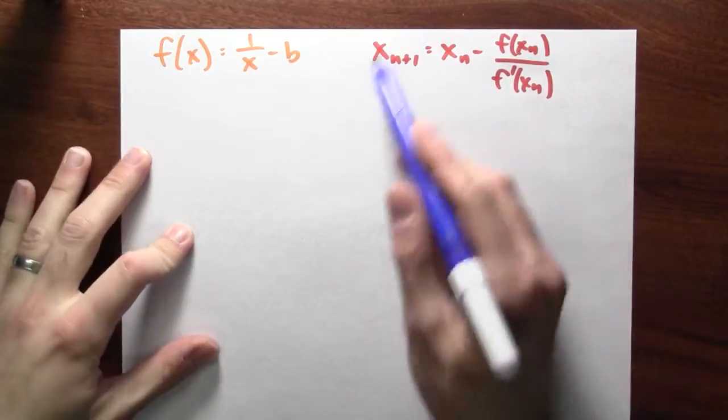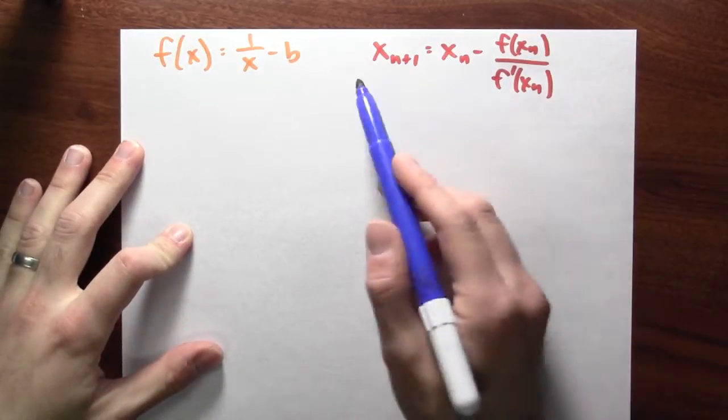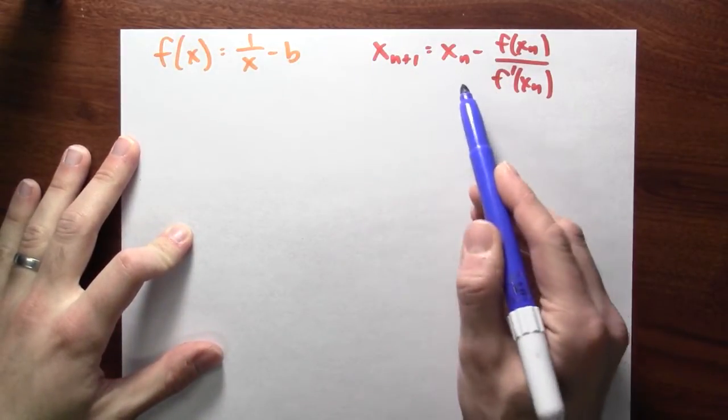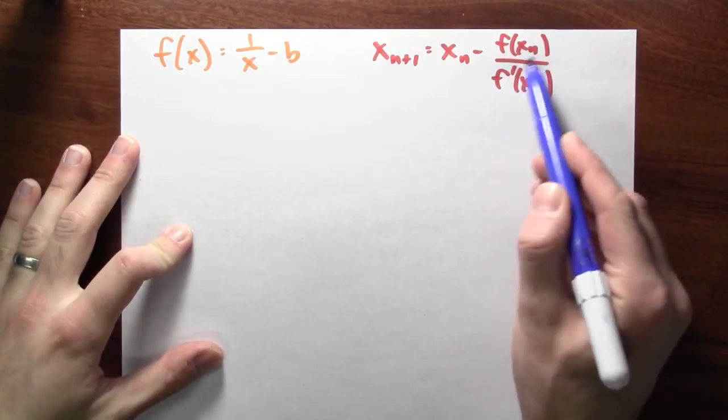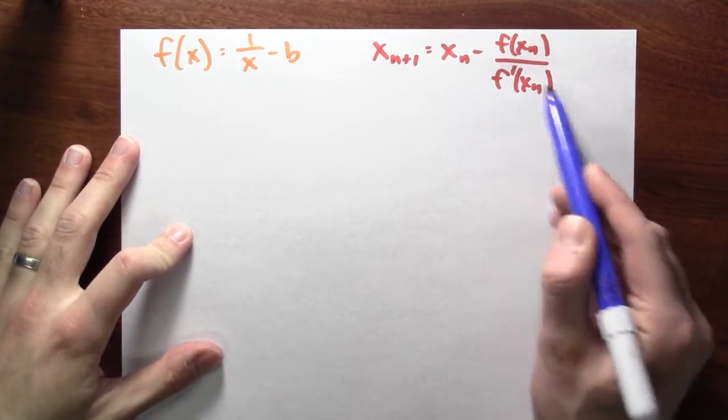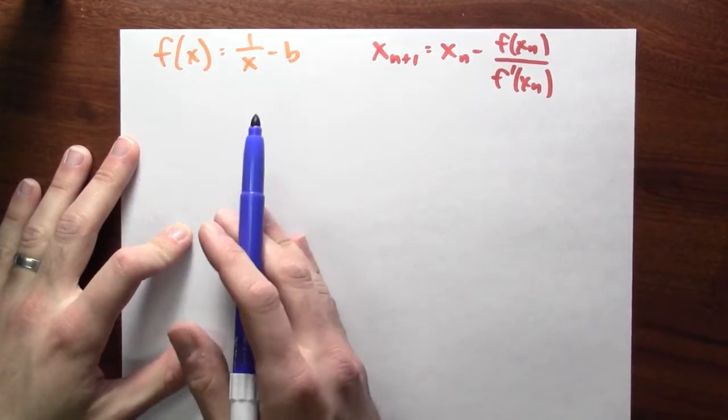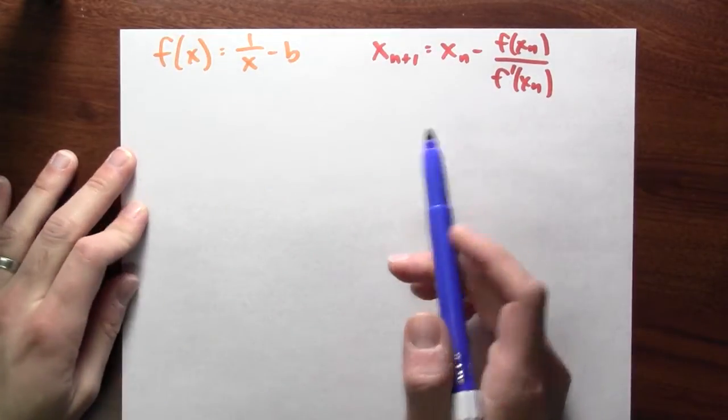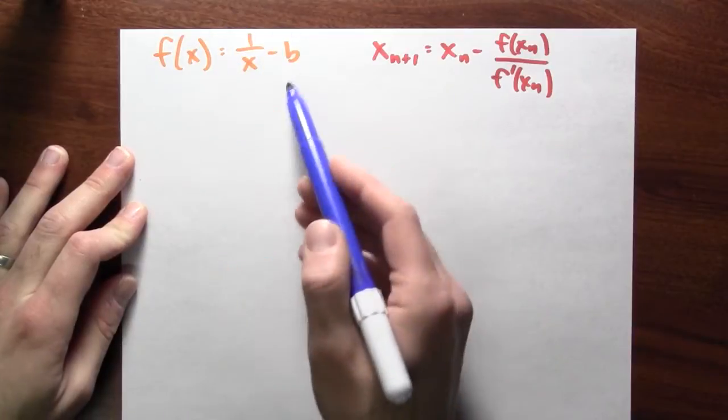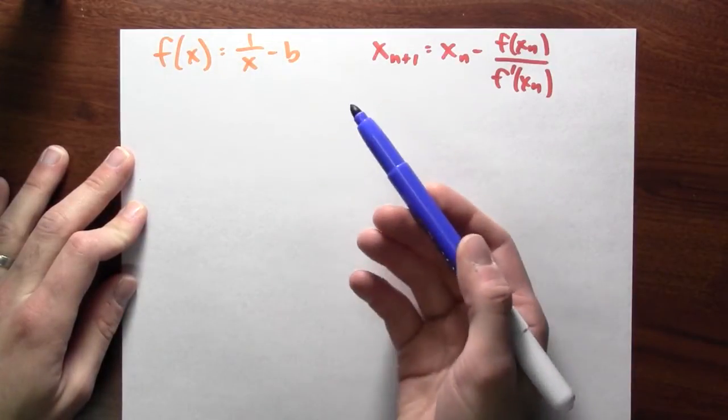Now, let's apply Newton's method. So how are we going to do this? Here's the formula for Newton's method, right? This is this iterative formula. My next guess is my old guess minus this fraction. The function evaluated at my old guess divided by the derivative evaluated at my old guess. And when this works, it's marching me closer to a zero of the function. And here's the good function for doing division. This function has a zero at one over b.